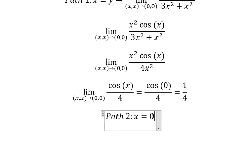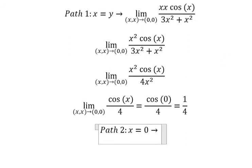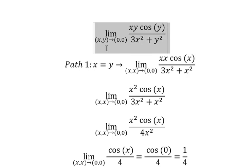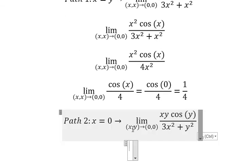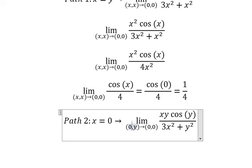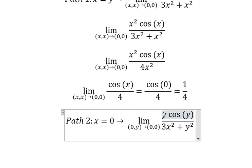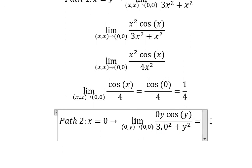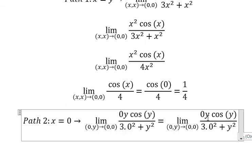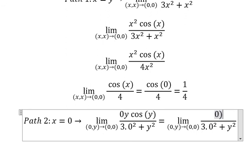Now let's go to Path 2. That means x equals 0. So we go back to this one. Now we change x into 0 in here, 0 in here, and 0 in here.